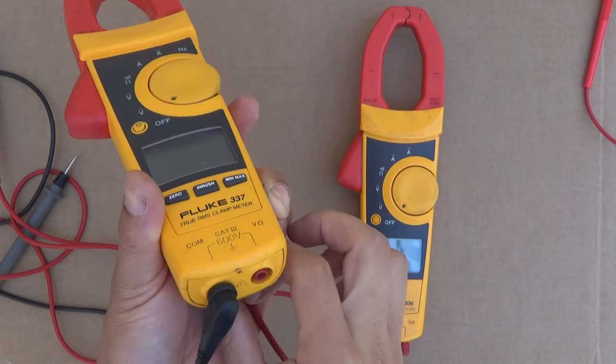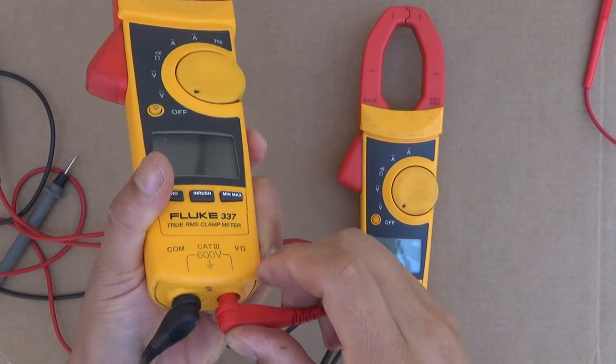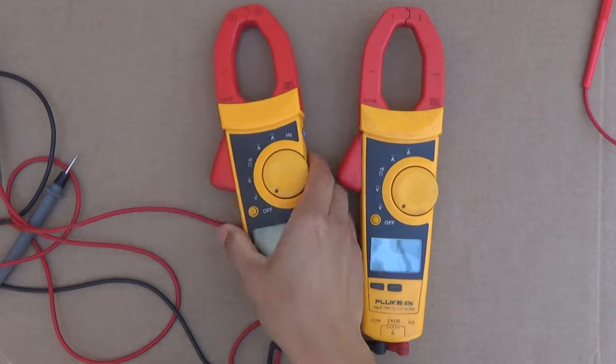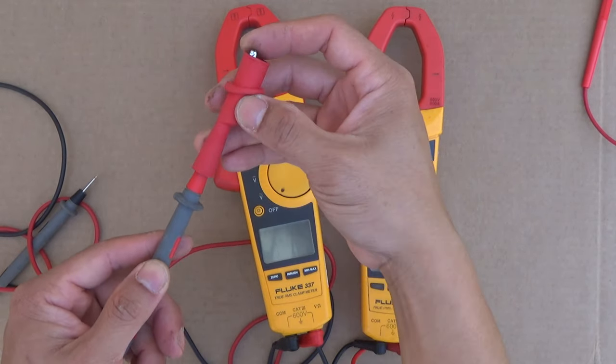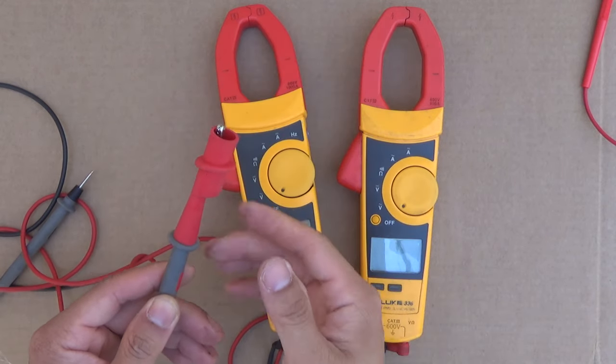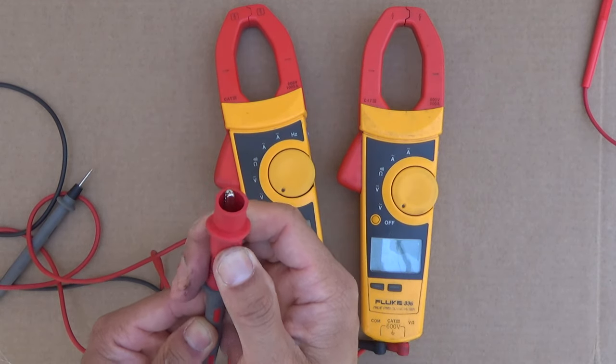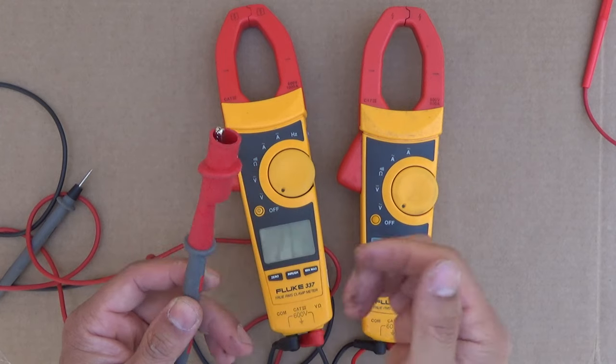There are two jacks below here, you can plug in your test lead. And the test lead itself has an alligator clip, so you can just plug it in like that. And now it becomes an alligator clip which is very convenient and easy to use.